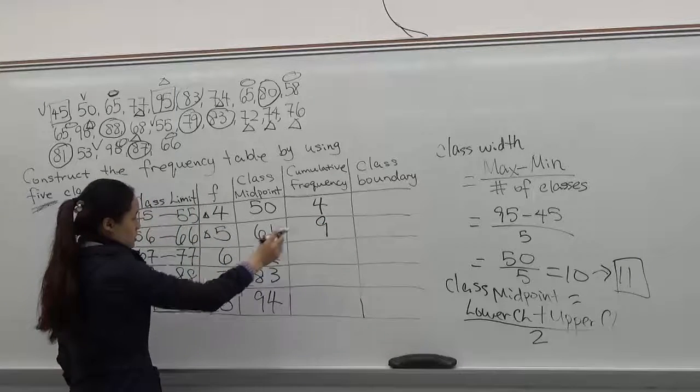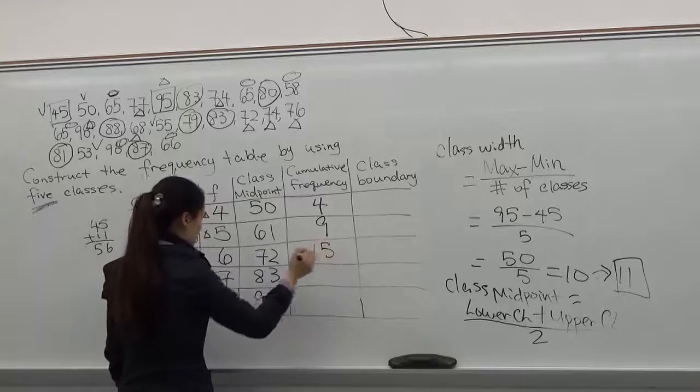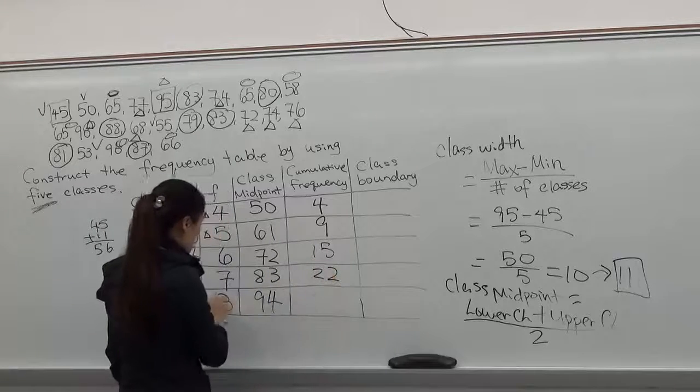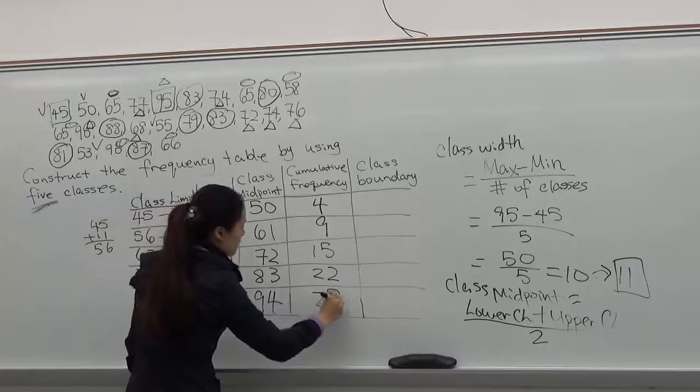And you have to add the third one to the 9. This is 15. And add 7 to 15. This is 22. 22, add 3 to 22. That's 25.